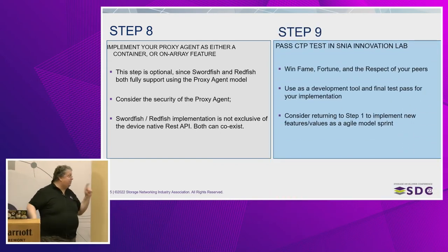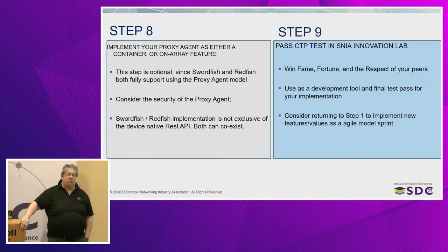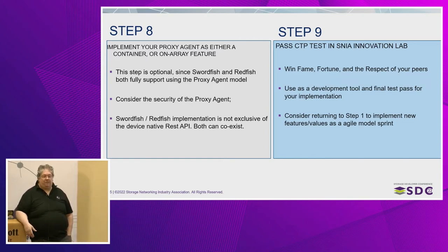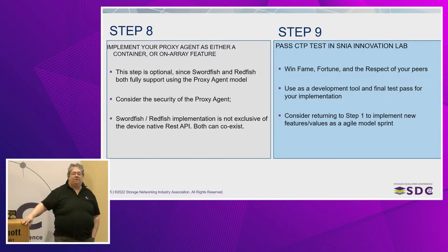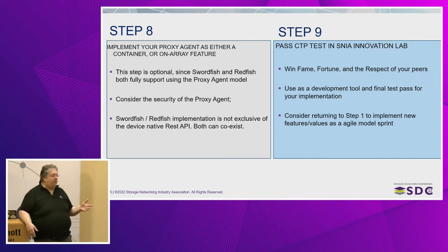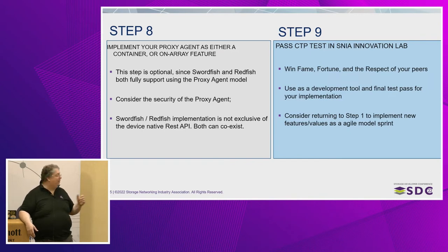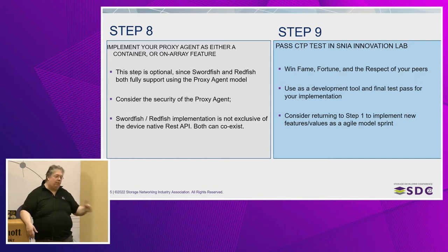Step nine: pass CTP. Win fame, fortune, and the respect of your peers. I'm talking about using CTP as a development tool, but once you've used it as a development tool, you can turn right around, run CTP for real, and post results saying you are compatible and compliant — and SNEA will post those results for you. It makes a great test pass. Modify your code, run CTP again — really easy. The idea is you can roll from step one to step eight and reiterate right back to step one, going from any step to any other step and rolling as fast or as often as you want. There's no predefined rule that makes one right or another wrong.